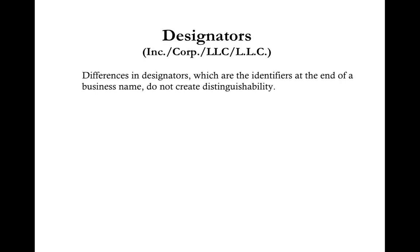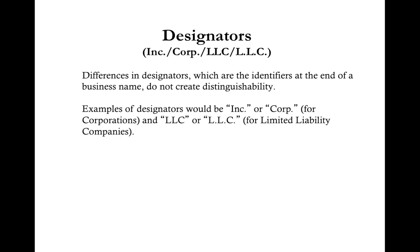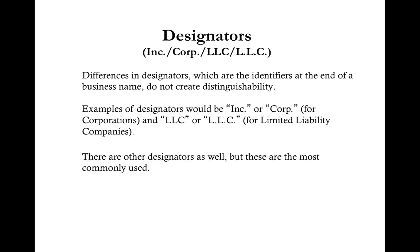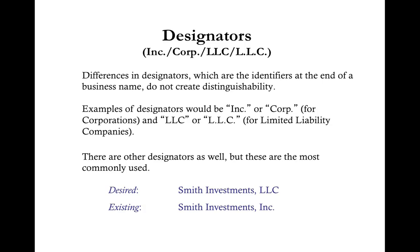Differences in designators — the identifiers at the end of a business name — do not create distinguishability. Examples of designators include Inc. or Corp for corporations, and LLC or L.L.C. for Limited Liability Companies. For example, if your desired LLC name is Smith Investments LLC but during your search you find Smith Investments Inc., your desired name would not be available. You would need to think of an alternative, such as Smith Financial Group LLC.